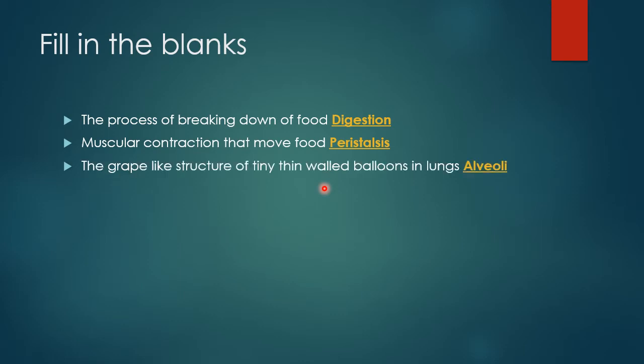The grape-like structure of thin-walled balloons in lungs is called alveoli. These are tiny air sacs in the lungs where gas exchange occurs between blood and air.